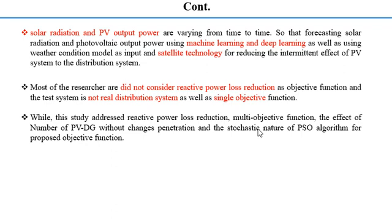When reviewing the research gaps, most researchers did not consider reactive power loss as a constraint, and the test systems used were not real distribution systems. Also, most used a single objective function. This study addresses reactive power loss reduction with a multi-objective function, analyzes the effect of the number of PVDG units without changing penetration, and studies the stochastic nature of the PSO algorithm for the proposed objective functions.